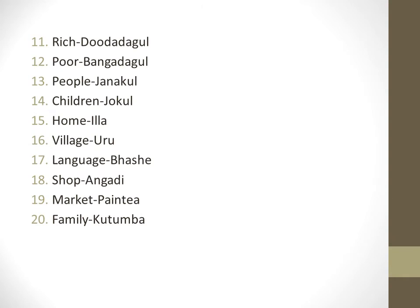Rich — Doddugul. Poor — Bangadagul. People — Janakul. Children — Jokul. Home — Ill. Village — Uru.